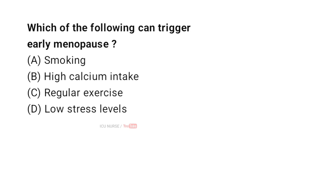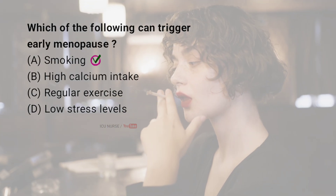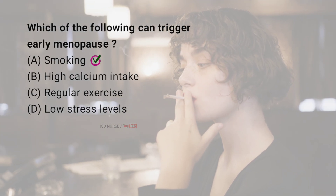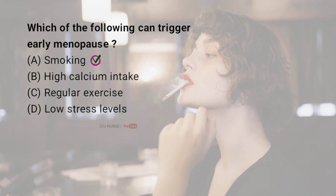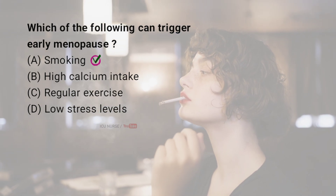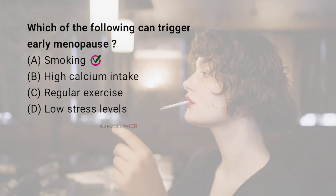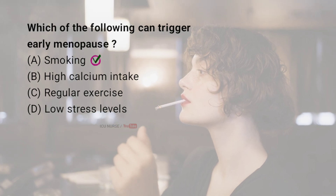Which of the following can trigger early menopause? A. Smoking. B. High calcium intake. C. Regular exercise. D. Low stress levels. And the correct answer is A. Smoking. Smoking has been linked to an earlier onset of menopause because it can affect hormone levels and speed up ovarian aging.